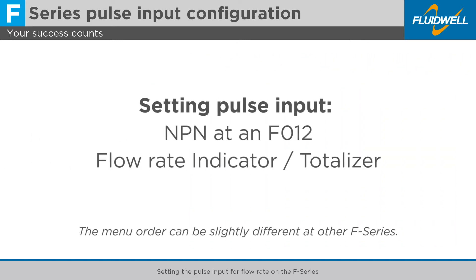In this example, we will set the pulse input for an NPN input signal on an F012 flow rate indicator totalizer. For different models in the F-Series, the setup is the same. However, the menu order may be slightly different.